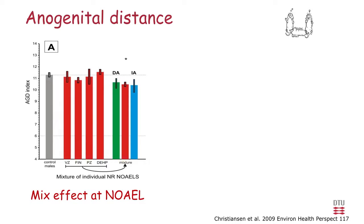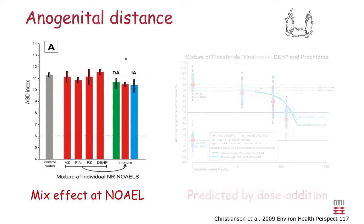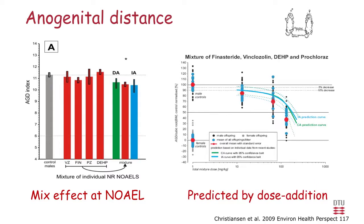Results for anogenital distance showed the same pattern: the four single substances individually had no effect, but the mixture produced a clear mixture effect at the NOAEL for the single substances. The dose addition prediction was very close to the observed results, and when we ran a full dose-response for the mixture, the observed results tracked the prediction curve closely. The results were very nicely predicted by dose addition.